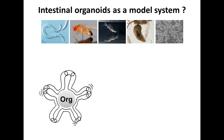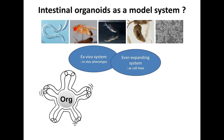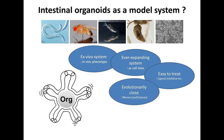To summarize the organoid advantages: it is an in vivo-like system where you can observe physiological phenotypes. It is ever-expanding — you can cryopreserve them like a cell line, restart experiments after your holiday. It is a tiny culture, so ligand and inhibitor treatment requires very small amounts. You can observe phenotypic changes readily. You can use mouse organoids or human organoids to study human biology directly.